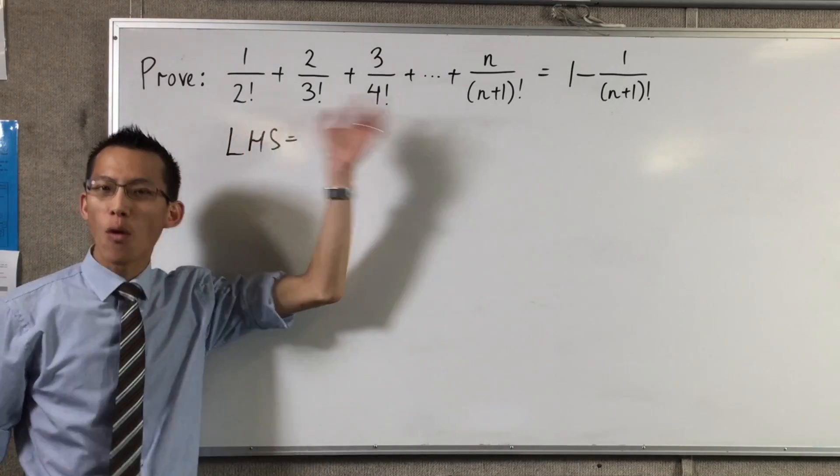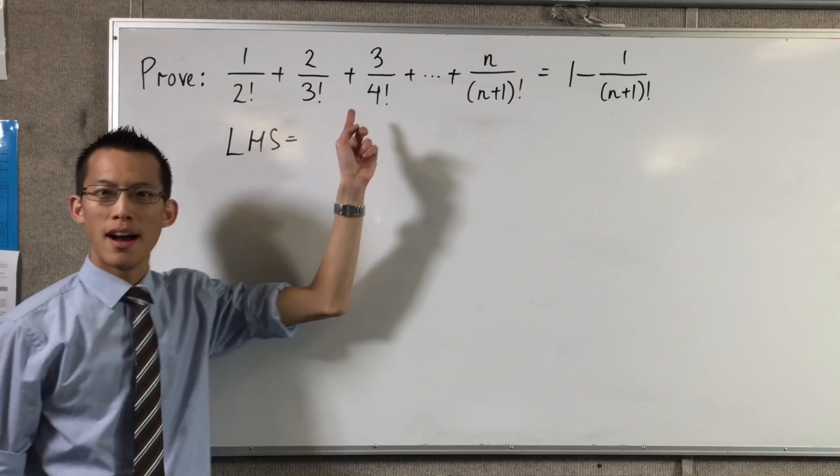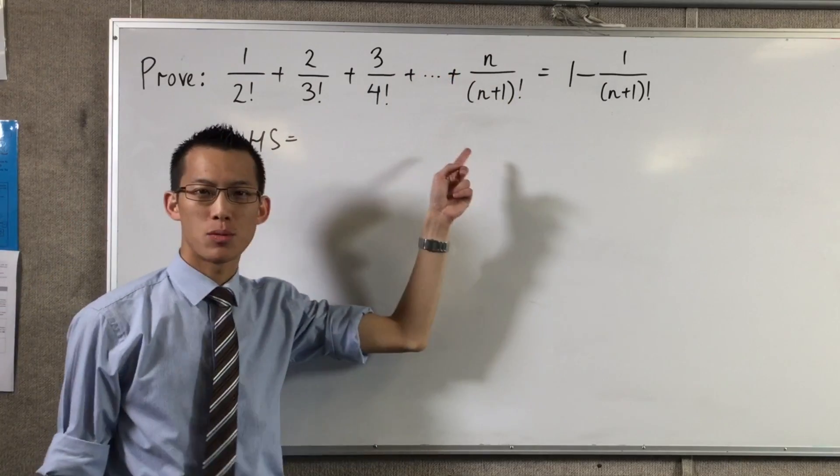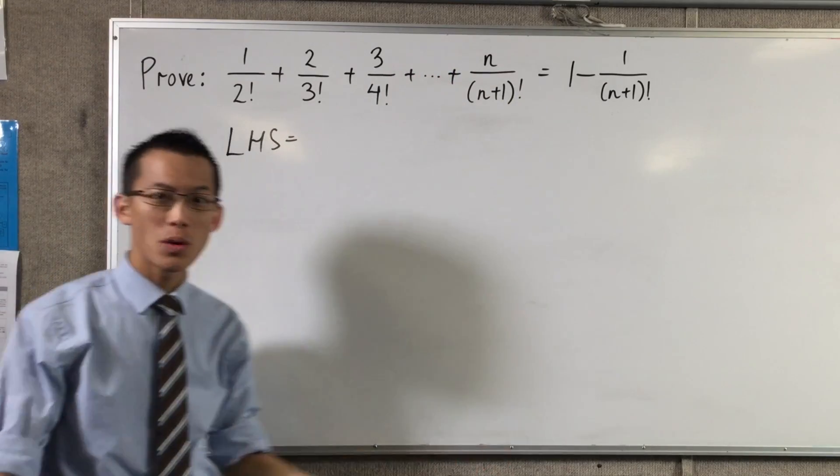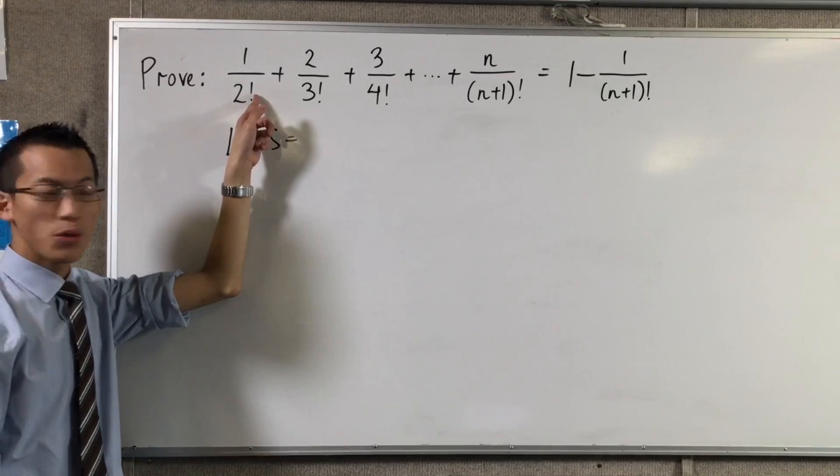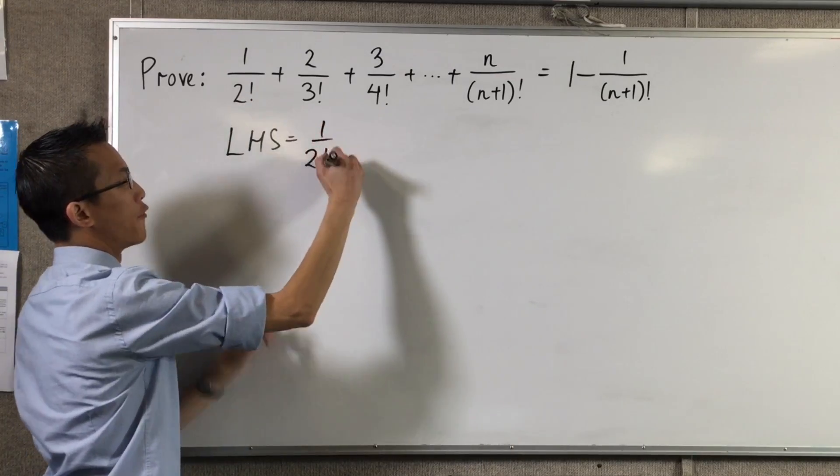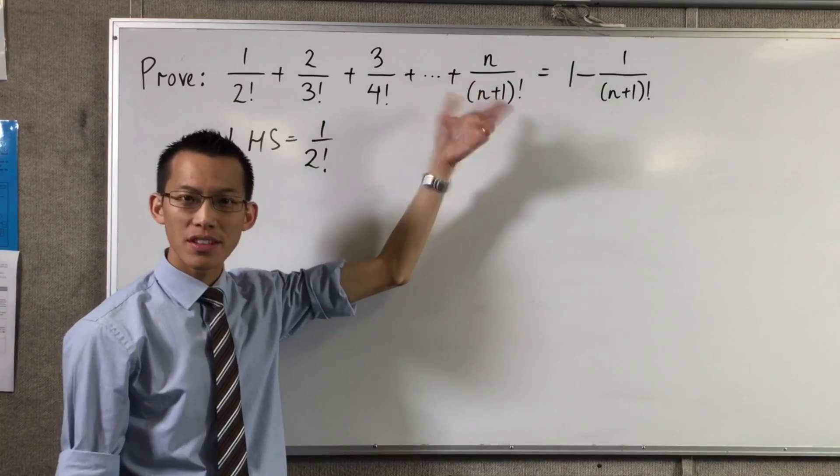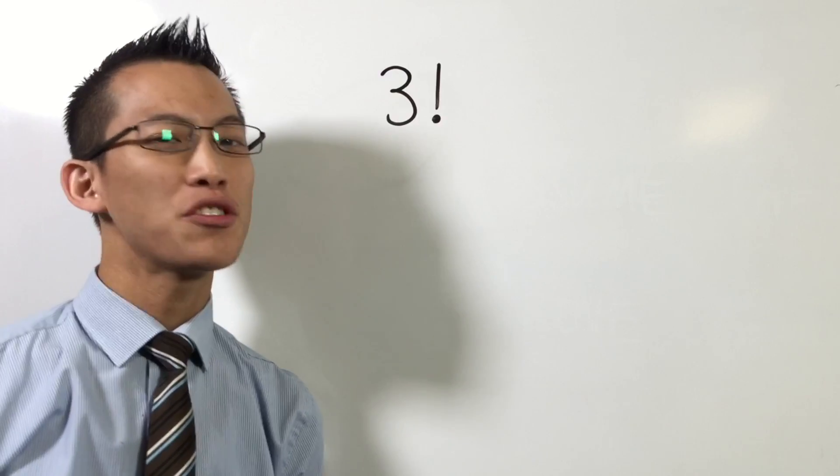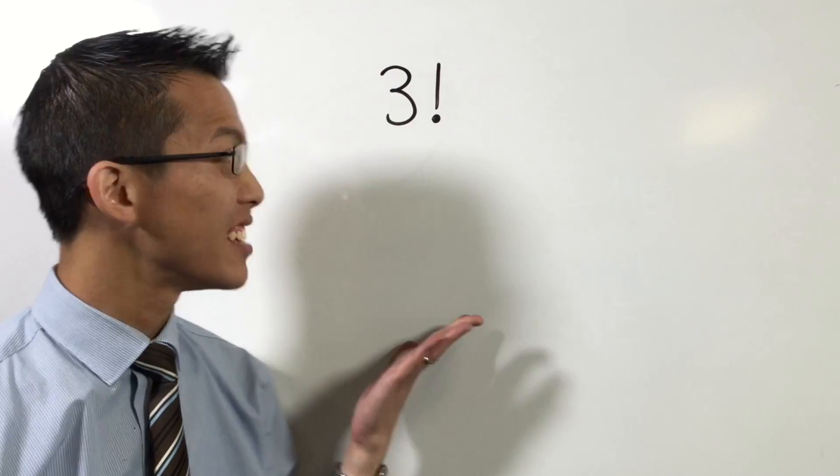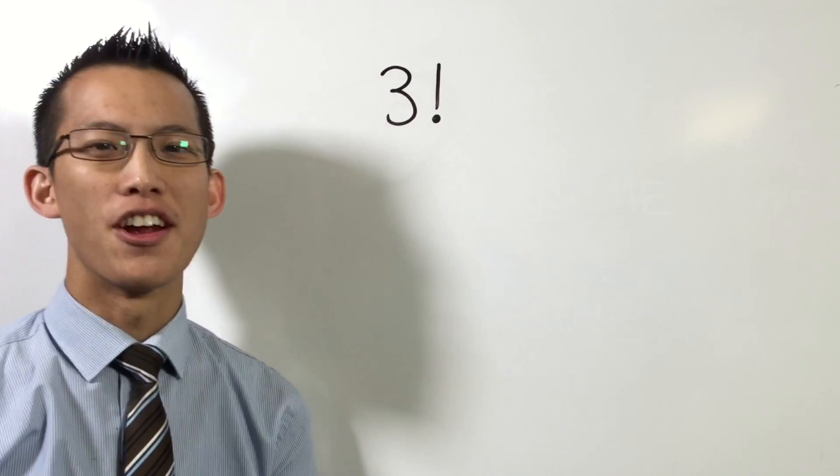n equals 1. This is the sum of all the fractions in this form, up until n on n plus 1 factorial. For n equals 1, that means 1 on 2 factorial is both the first term and also the last term. At this stage, we need to remember what the factorial function is. We first met this in the topic of binomial theorem.